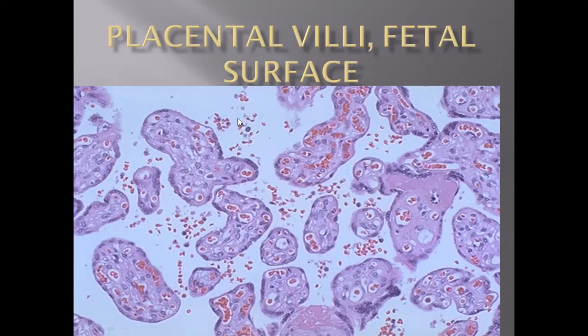The RBCs between the two villi represent maternal blood, and this is where gas exchange takes place. During the initial days of pregnancy, the villi penetrate the endometrium and cause rupture of the spiral arteries. When the spiral arteries rupture, the RBCs come out and lie between the villi, and there is also formation of fibrin, which we will discuss in future videos.